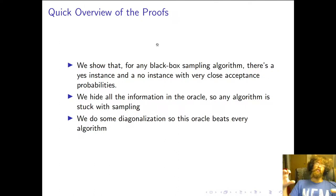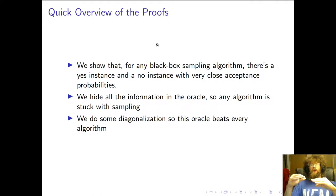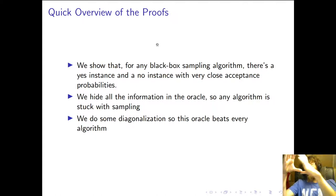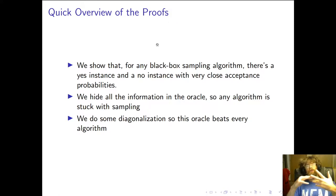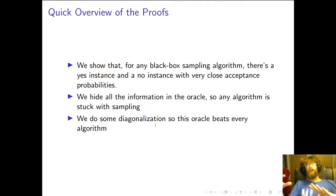At a high level, we show that you can't solve these problems in SBP with strictly sampling techniques — with a polynomial number of samples you can't get that 2-to-1 probability ratio. We use the oracle to hide everything you can do that isn't sampling. We use the same circuit for every instance so the algorithm can't learn anything from the circuit, and we randomize which instances we use so the algorithm can't cheat. Then we do diagonalization to make one oracle that beats every algorithm.